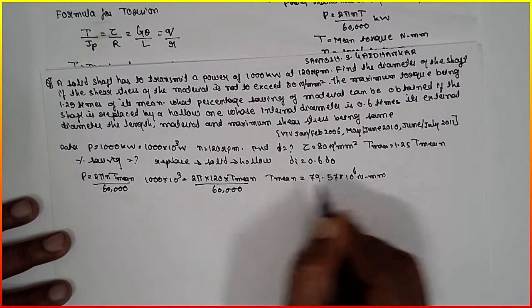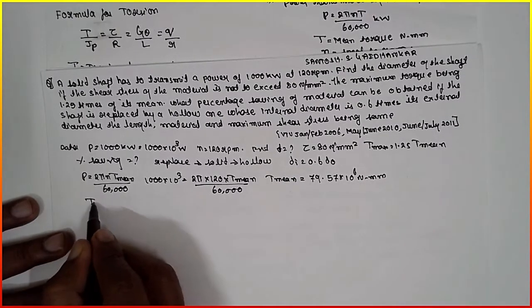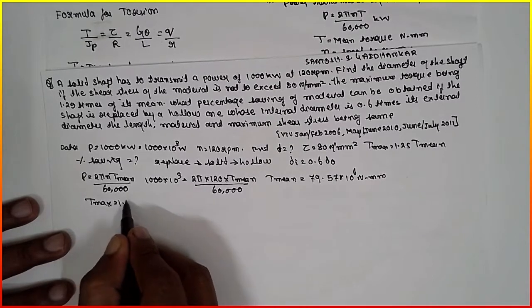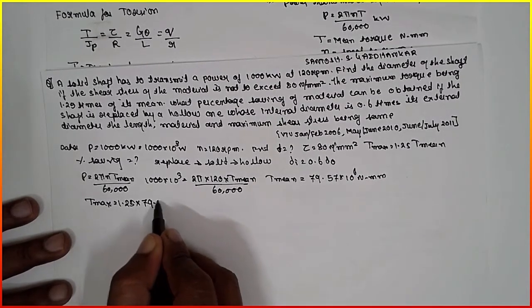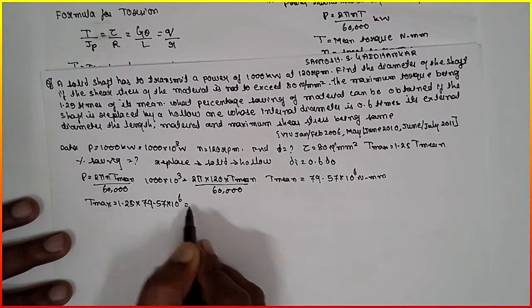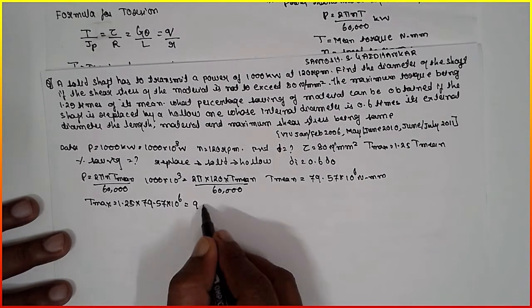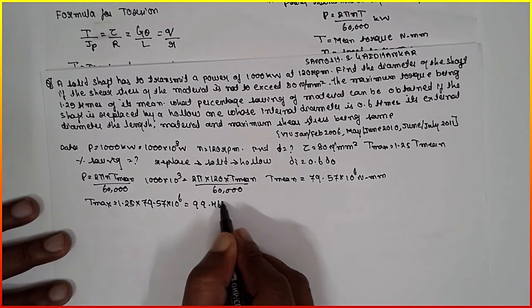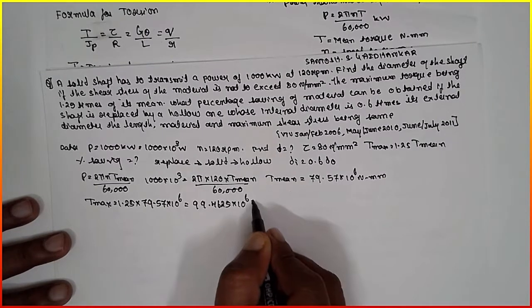Once we have T_mean, we substitute into the T_max formula. T_max = 1.25 × 79.57 × 10⁶ = 99.4625 × 10⁶ N·mm.